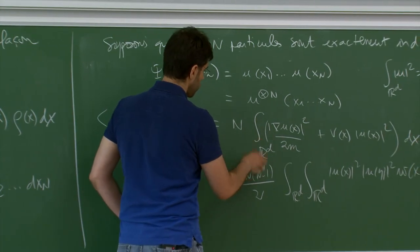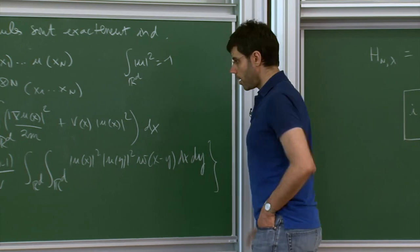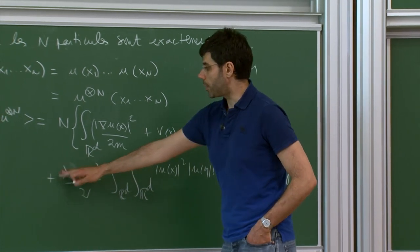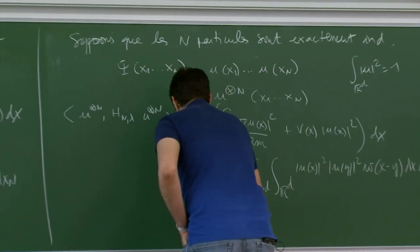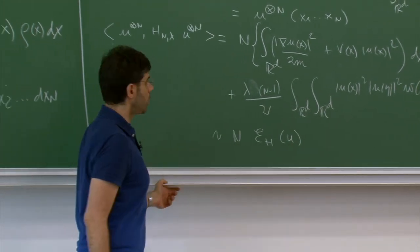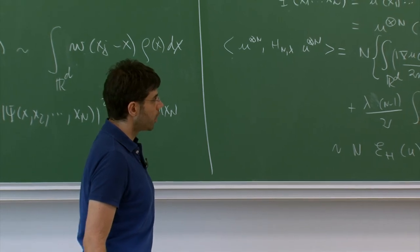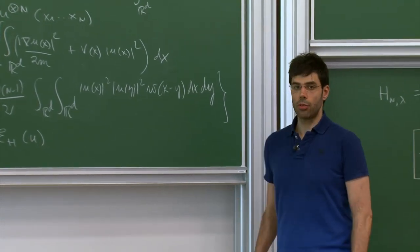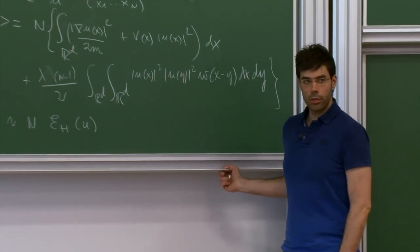We can factor out N. Recall that λ is of order 1/N, so λN(N−1)/2 → 1/2 as N→∞. Therefore this energy is essentially N times a nonlinear energy depending only on u, no longer on N. Replacing λ(N−1) by 1, we get what is called the Hartree energy — a slightly regularized version of the nonlinear Schrödinger energy. Instead of having |u|⁴, we have |u(x)|²|u(y)|² with W(x−y).